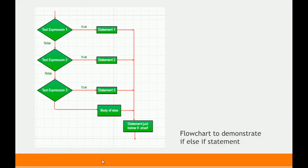In the flowchart: if test condition one is true, statement one executes and gives the result. If test condition one is false, it checks test condition two. If true, statement two executes. If test condition two is also false, it moves to test condition three. If test condition three is also false, the control goes to the body of else and gives the output as per the statement inside the else block.